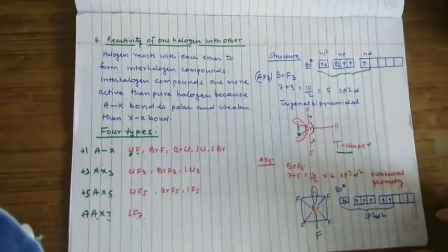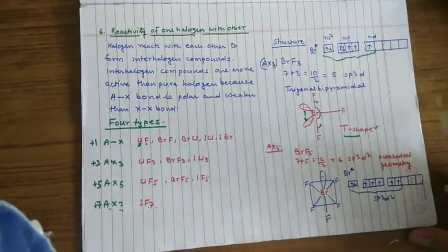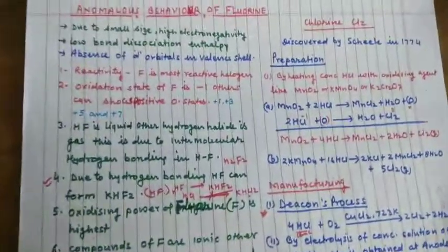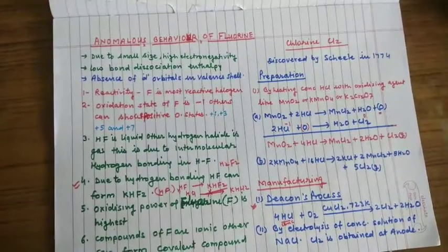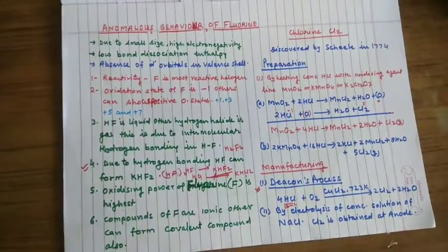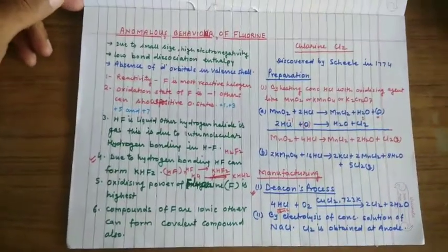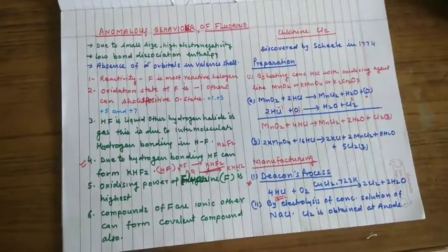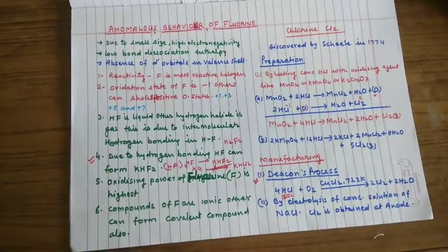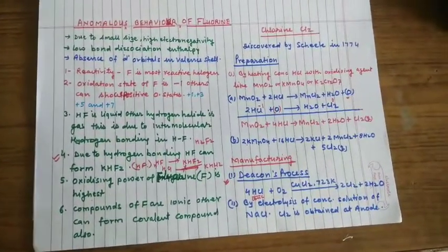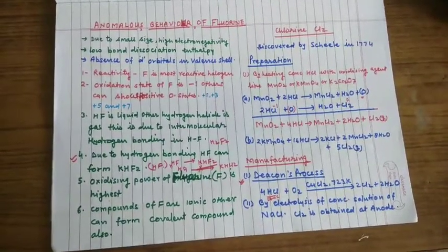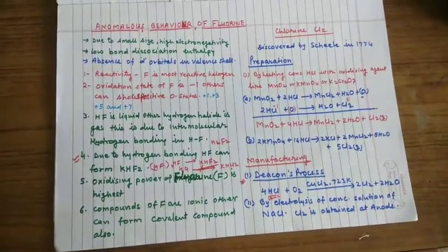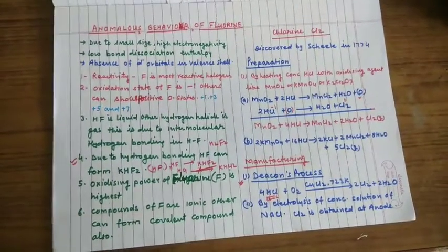In this way we can predict the geometry of interhalogen compound or any molecule. If you have to predict geometry, first find its hybridization state.